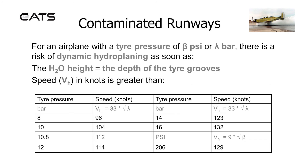For an airplane, with the tire pressure in psi or bar, there is a risk of dynamic hydroplaning as soon as the height of the water equals the depth of the tire grooves. The hydroplaning speed in knots may be calculated using the following two formulae: Vh, hydroplaning speed, equals 33 multiplied by the square root of the tire pressure in bar; or hydroplaning speed equals 9 times the square root of the tire pressure in psi.